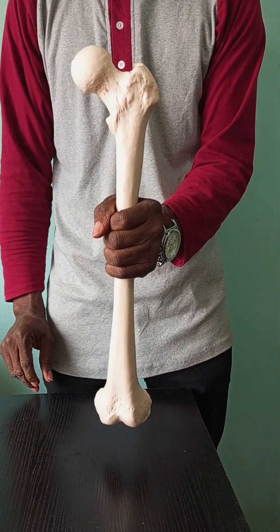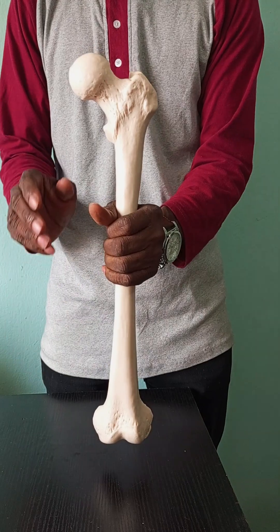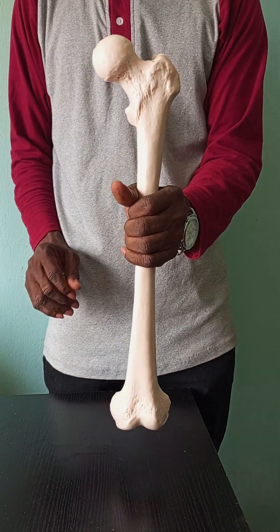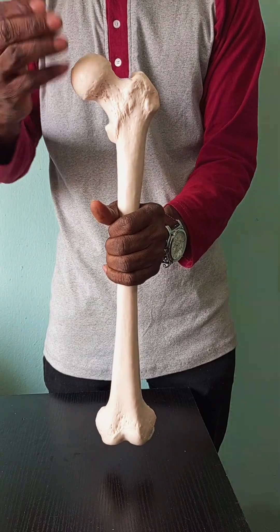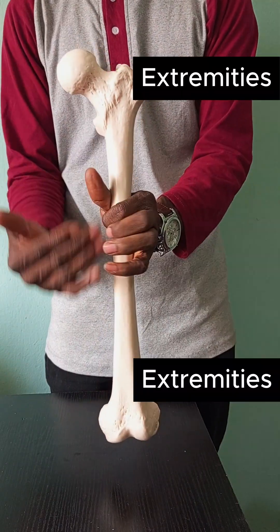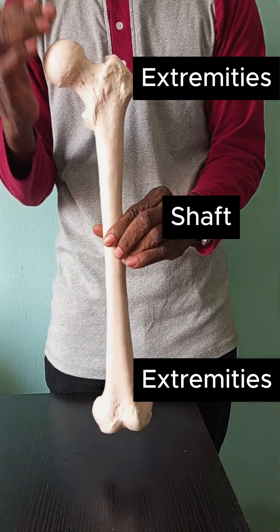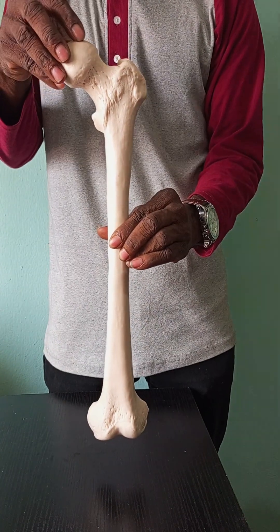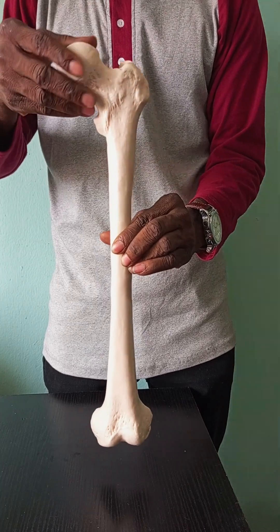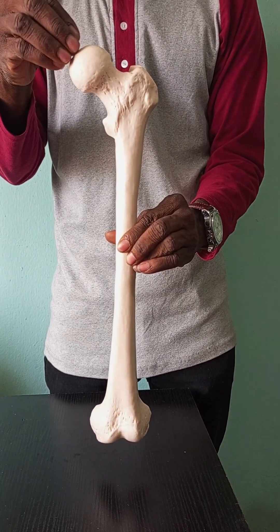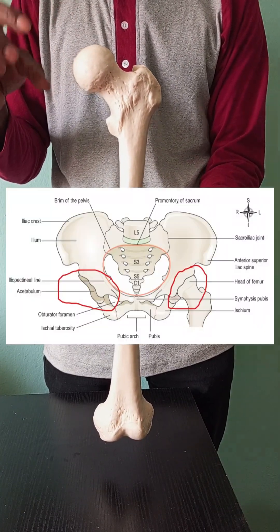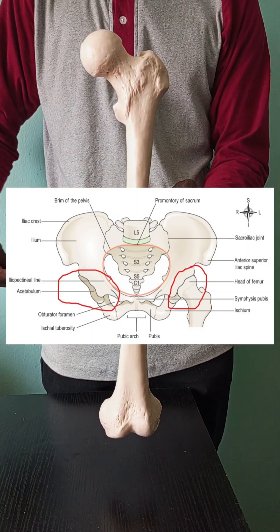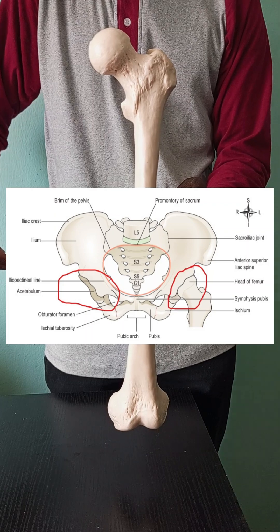So you've got to hold the bone like this facing your examiner. You start by saying the femur is a long bone of the thigh. It has two extremities and then a shaft. And superiorly, starting from the top, there is a ball-like head. This ball-like head articulates with the acetabulum of the innominate bone to form the hip joint.